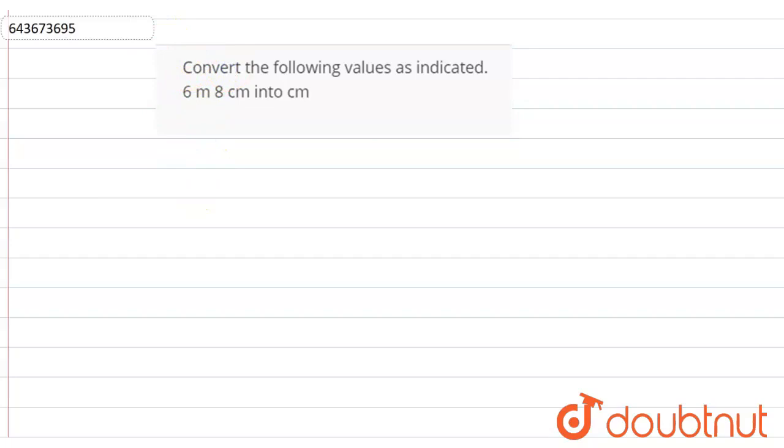Convert the following values as indicated, which is 6 meter 8 centimeter into centimeter. So we have a combination of meter and centimeter in the question, 6 meter 8 centimeter, which we need to convert into centimeters.